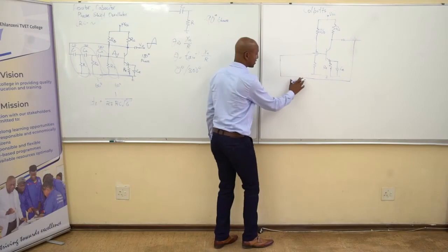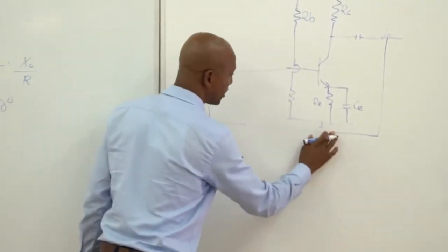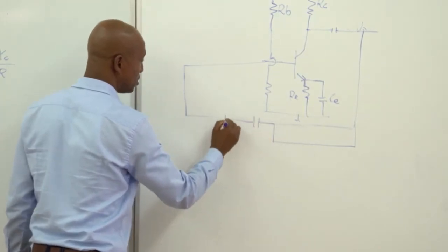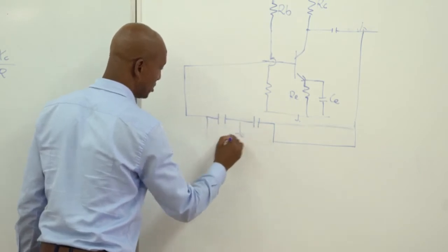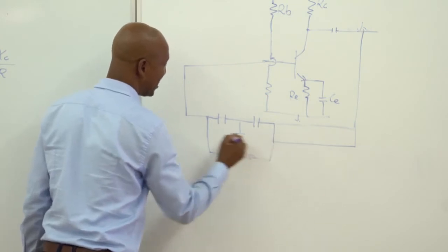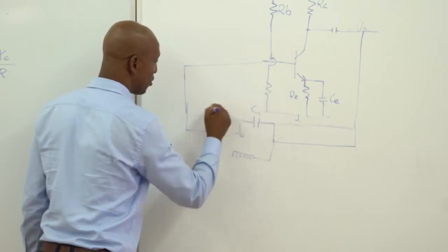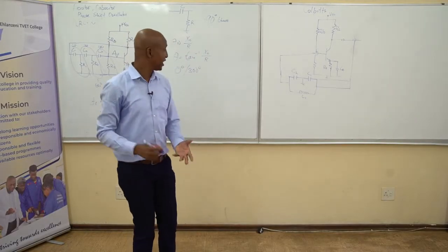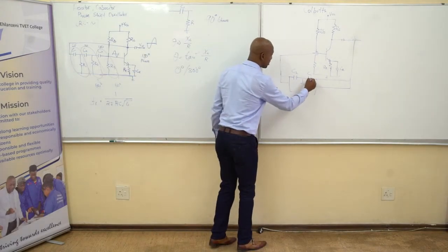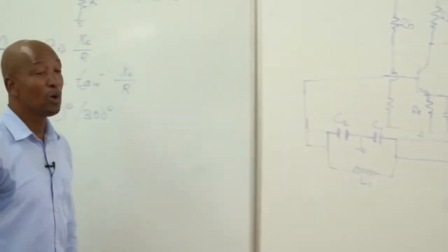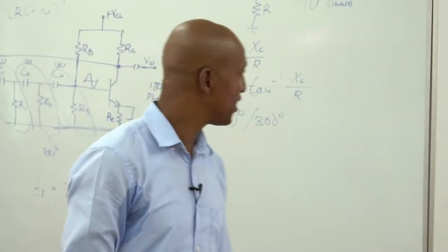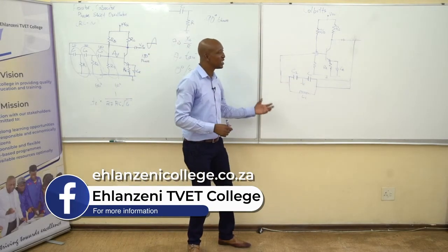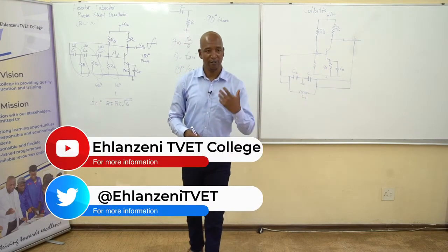How do we achieve our 360-degree phase shift? We introduce our tank circuit. In a Colpitts oscillator, the tank circuit has two capacitors with an inductor — this is an LC circuit. We call this C1, C2, and L1. That is our Colpitts tank circuit. It uses capacitors connected in a specific format. Now we need to understand how we achieve the phase difference or phase shift from this arrangement.